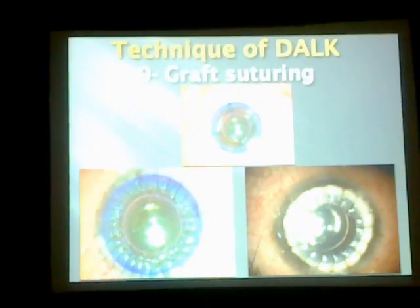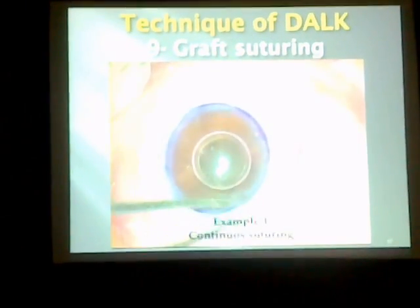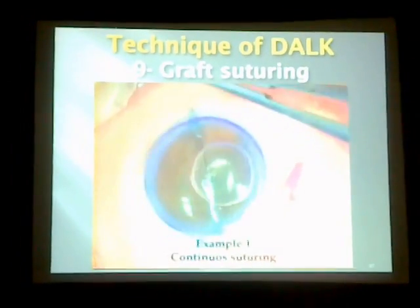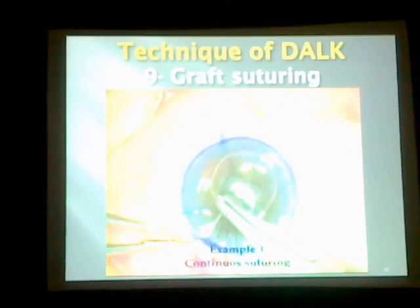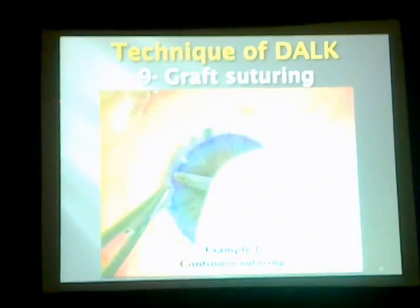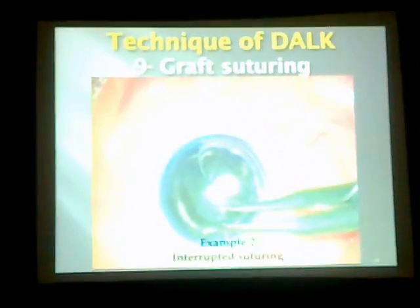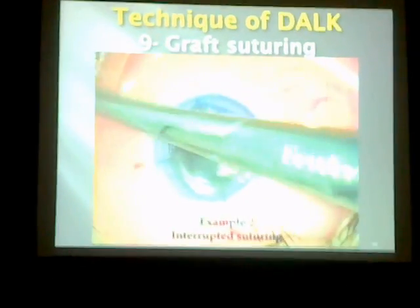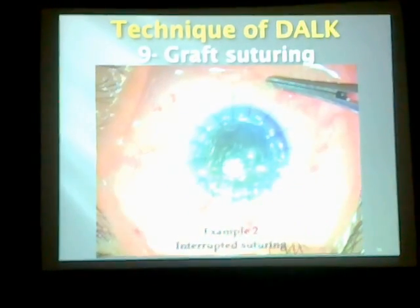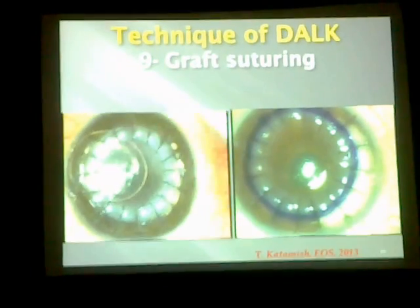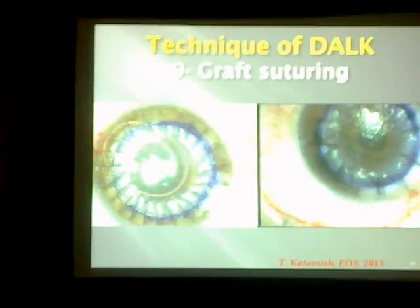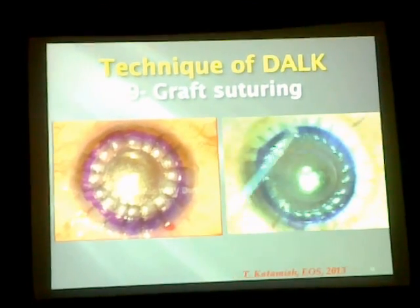Step number nine, the last step, is suturing. Suturing does not differ much from penetrating keratoplasty — we can do continuous suturing — but we have to be very careful during suturing not to injure the Descemet's membrane, looking very closely to avoid perforation at this stage. This is an example of continuous suturing, almost the same as in penetrating keratoplasty, and this is an example of interrupted sutures, and combinations of both at the end of the operation.